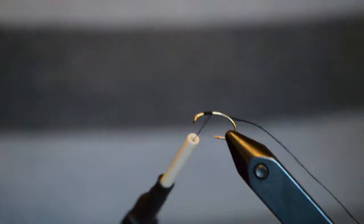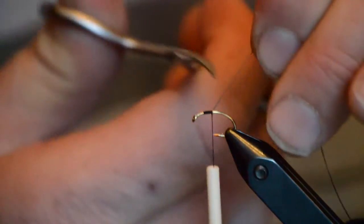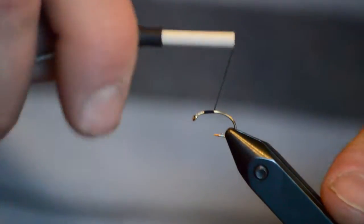We'll begin by placing the thread about a third of the way down the hook, working our way back towards the end to where we begin our pattern.